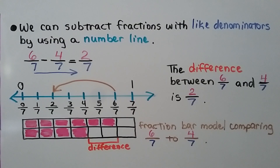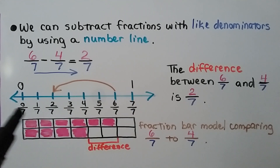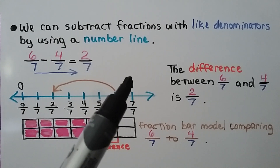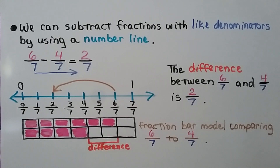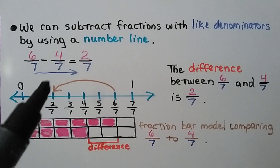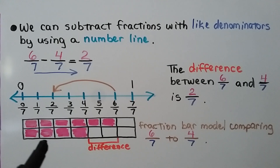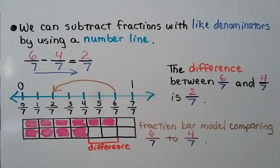We can subtract fractions with like denominators by using a number line. We have 6 sevenths minus 4 sevenths. Our number line is split into sevenths, starting from 0 as 0 sevenths, going up to 1 as 7 sevenths. We have 6 sevenths; we're going to take away 4 sevenths, which puts us at 2 sevenths. Using a fraction bar model, we can compare 6 sevenths and 4 sevenths and see the difference is 2 sevenths.